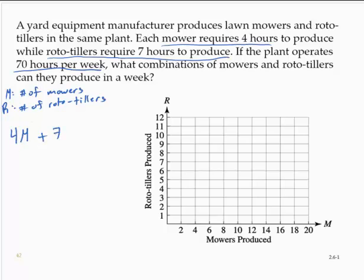And we'd have seven times the number of rototillers produced. Now, we can only operate for 70 hours per week. So that amount of time has to be less than or equal to 70. We can't go over 70. We could be exactly 70, or we could produce some combination that is less than 70.